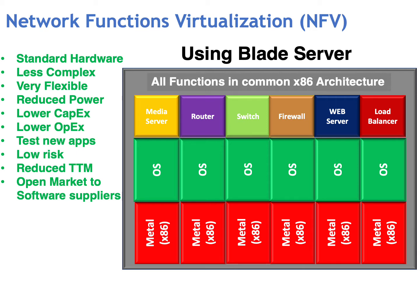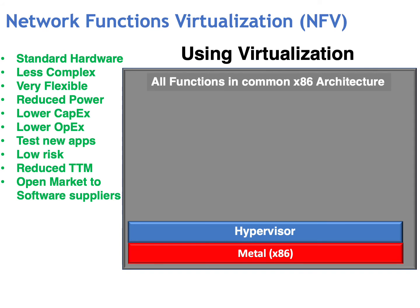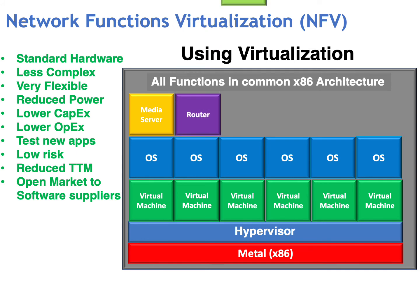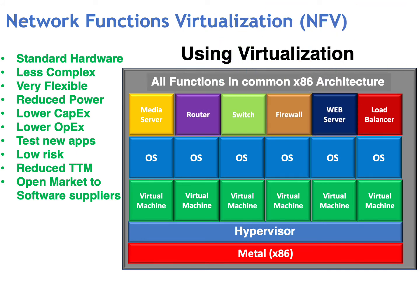Moving forwards, most operators and enterprise users will prefer to use a virtual environment. Using virtualization, we can still use a standard x86 architecture — a single server — but running on top of that x86 platform, we install a hypervisor. On top of the hypervisor, we can install all of the virtual machines, each virtual machine associated with its own independent operating system, and in turn running the media server, the router, the switch, the firewall, the web server, or the load balancer. This gives us standard hardware architecture which is less complex, very flexible, with reduced power consumption, lower CapEx, lower OpEx, and much more flexibility to test new applications with lower risk, reducing time to market and opening up the market to many other software suppliers.